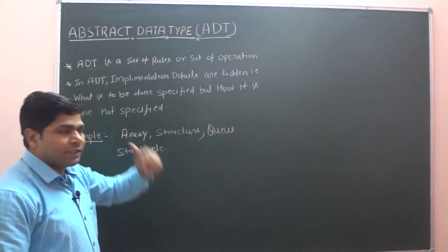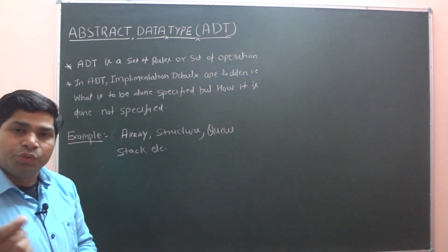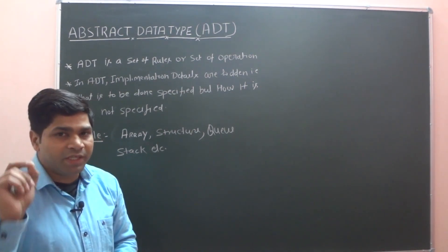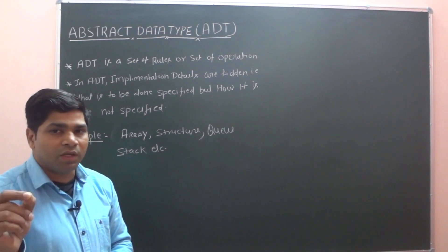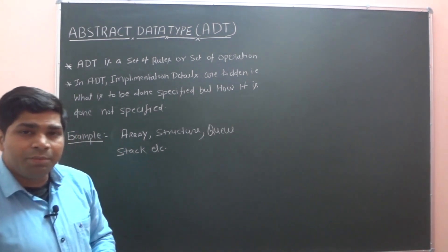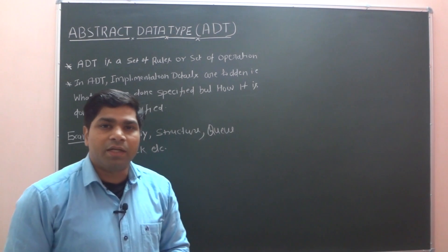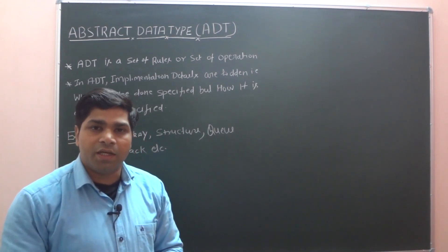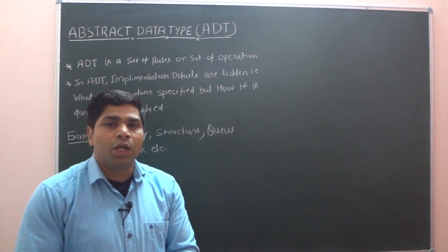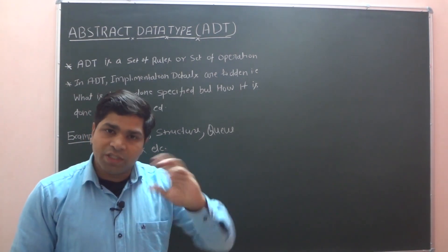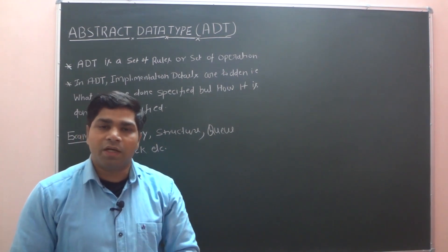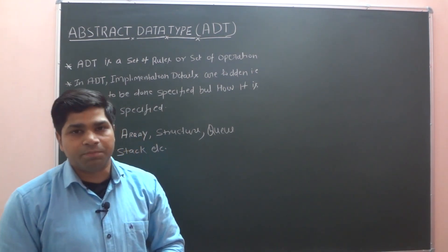So your abstract data type is a user-defined data type. And non-primitive data structures are abstract data types. All your built-in data types like int, character, and float — these are not ADT, not abstract data types. So all your user-defined data types or non-primitive data structures are abstract data types.